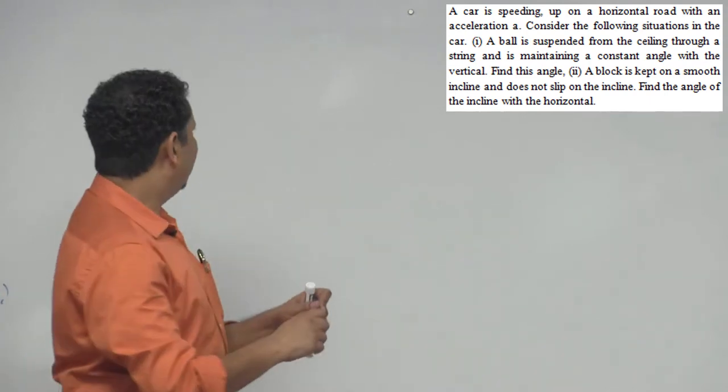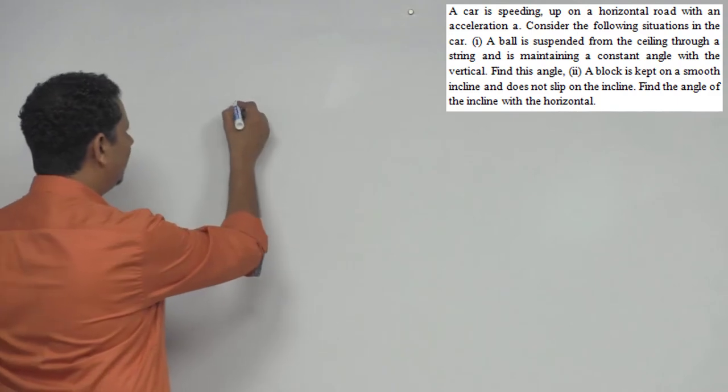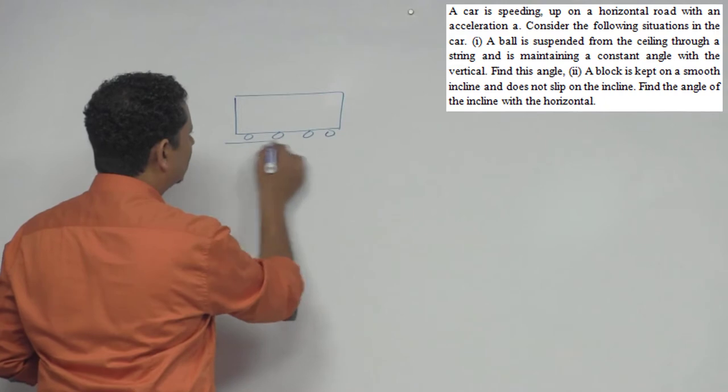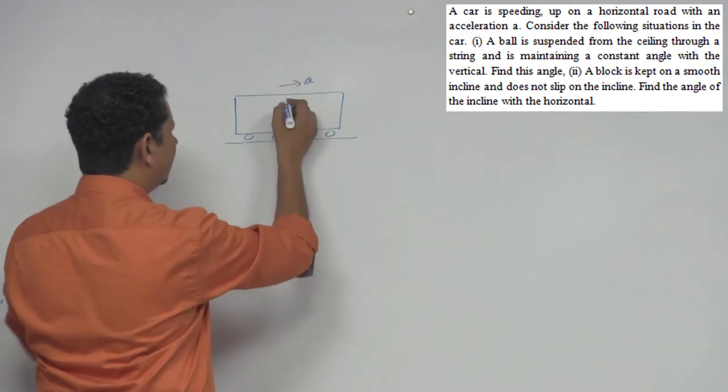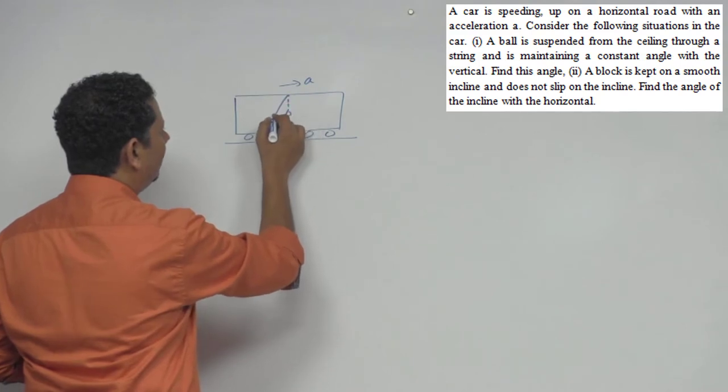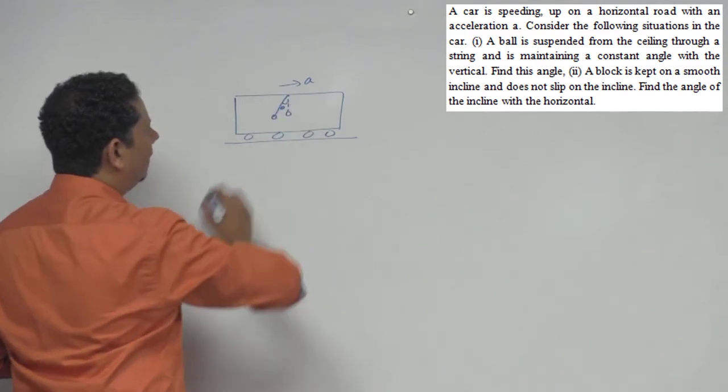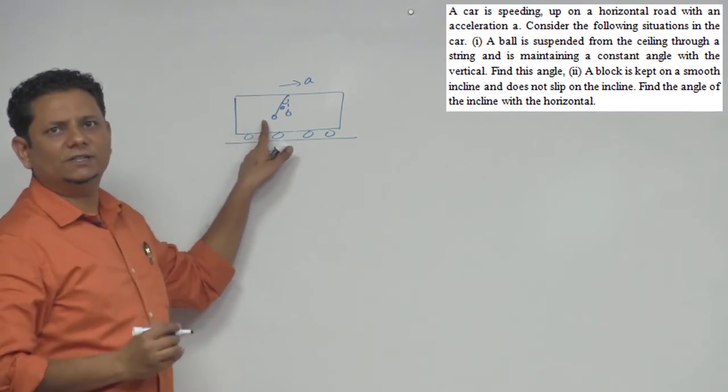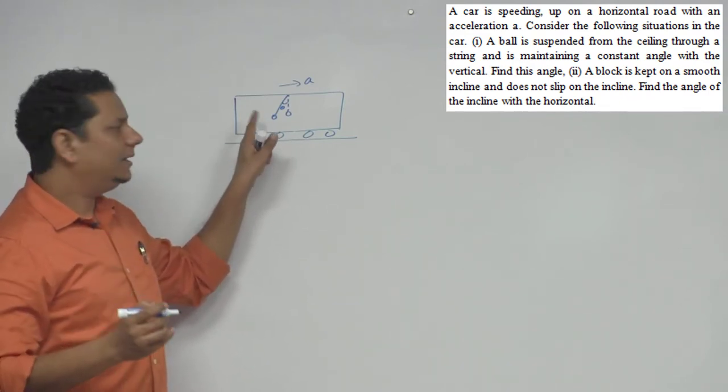Now, this is a good question. The scenario is: you have a container accelerating with acceleration A in this direction. Here the ball is hanging, and the ball is at some theta angle here. It's constant, basically fixed at this position, maintaining this constant angle.